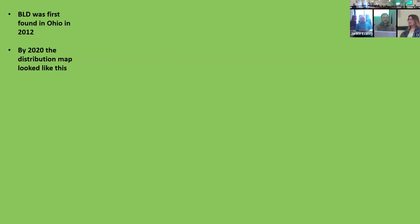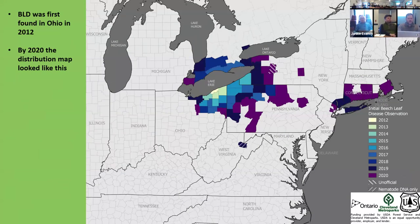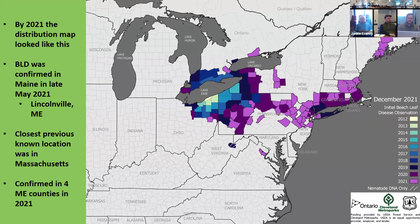A little history about beech leaf disease: it was first found in Ohio in 2012, and by 2020 the distribution map showed it still far from Maine. By 2021, though, it showed up in Maine. Somehow the beech leaf disease nematode was able to make it from Connecticut and northern Massachusetts all the way up to Waldo County, Maine — which was a big surprise. The closest previous known location was Massachusetts.